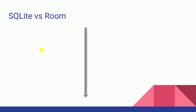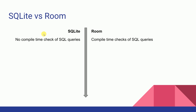Room also uses SQLite as the database, so then why should we use Room? Here are the advantages of Room over SQLite. The first thing is SQLite doesn't have any compile time checks of SQL queries — if you write something wrong in your SQL query you will not get compile time errors. But in the case of Room you will get compile time checks of the SQL queries that you write, so it is very less likely that you will make errors in your SQL queries.